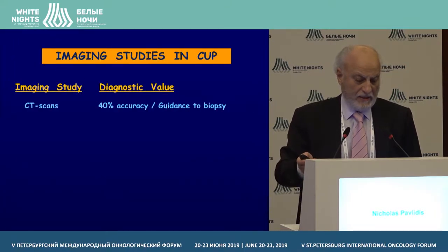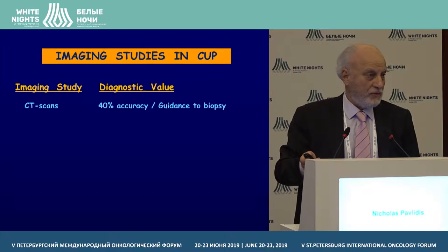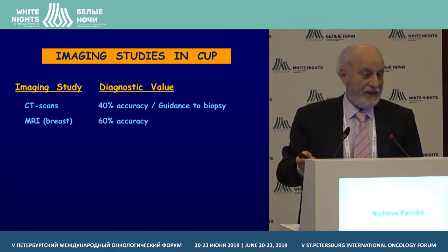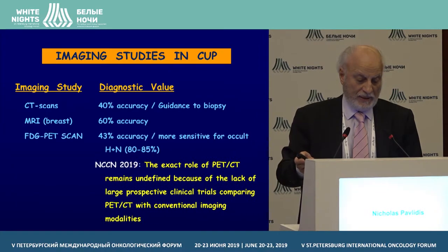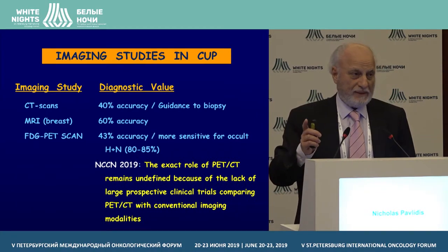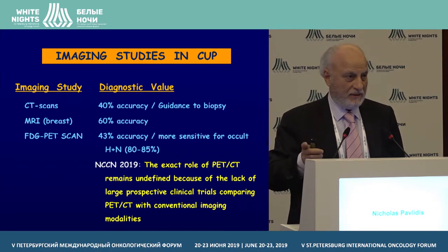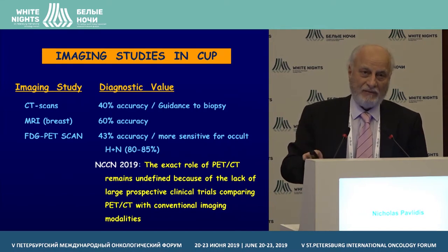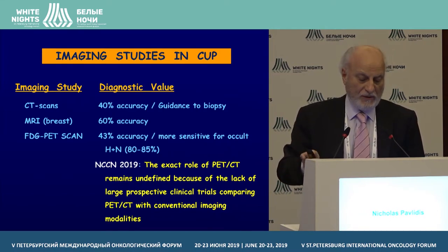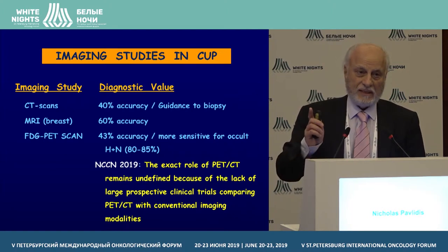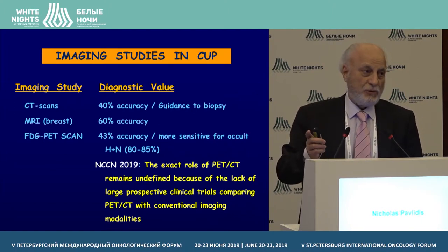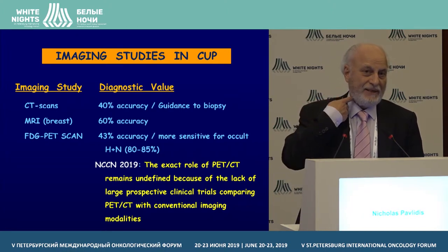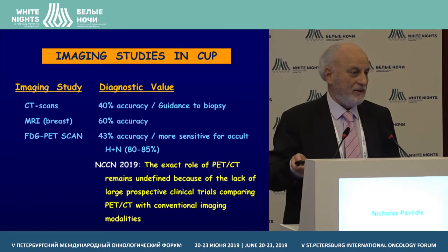What about imaging studies? CT scans are useful — about 40% can give you the primary site. MRI, especially for the breast, is accurate in 60%. But be careful: PET scan is not yet accepted as a method to identify the primary tumor in all patients. What we need is some prospective studies, which we do not have yet. However, in patients with a hidden head and neck cancer, PET scan is quite useful.